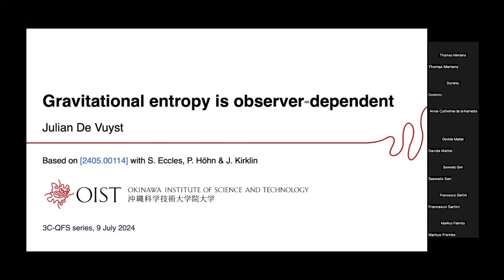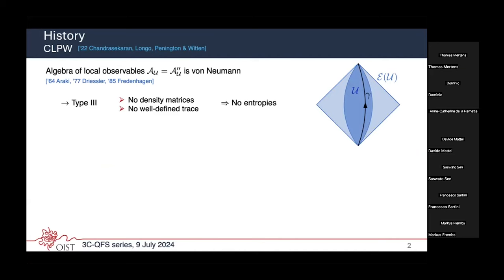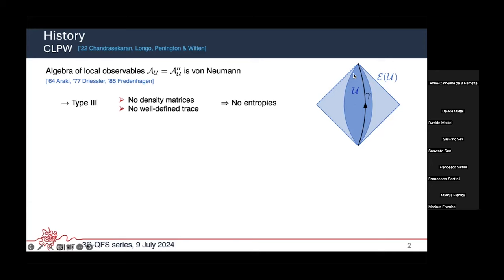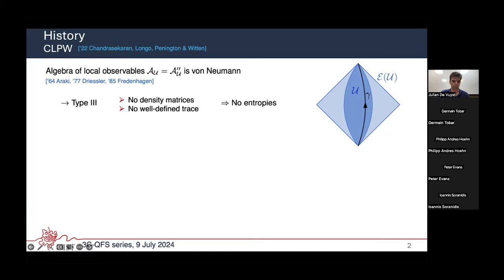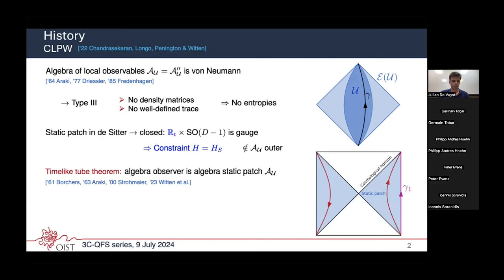A bit of history on what sparked interest in this field: it has become well appreciated that if we look at the algebra of local observables for some spacetime region U, this is a von Neumann algebra — specifically, an algebra whose bicommutant equals itself. In QFT, this algebra turns out to be of Type III, which means there are no well-defined density matrices, no well-defined trace, and no well-defined entropies. This is essentially the reason for the UV divergence of entropy in QFT settings.